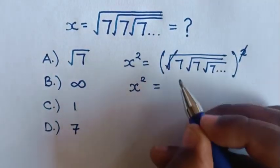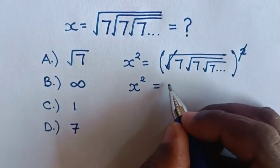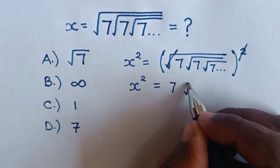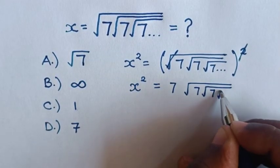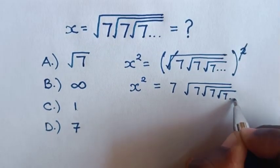The square will cancel the square root. Then our expression becomes 7 times square root of 7, square root of 7, square root of 7, infinitely.